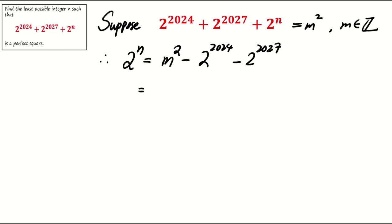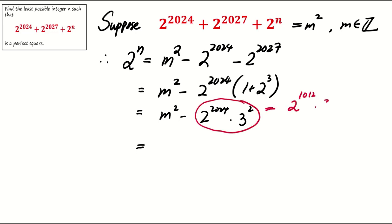Note that the two terms in base 2 can be combined as 2 to the power of 2024 times 1 plus 2 to the power 3. Since 1 plus 2 to the power 3 is 1 plus 8 which is 9 or equivalently 3 squared, the expression is of the form x squared minus y squared which can be factored as x plus y times x minus y as shown.